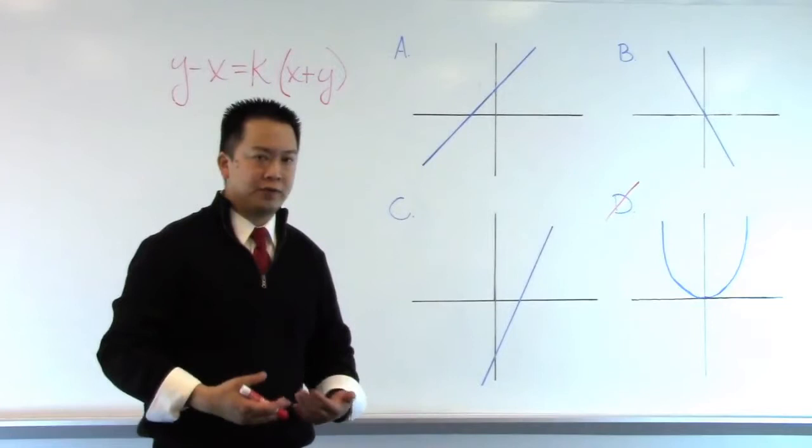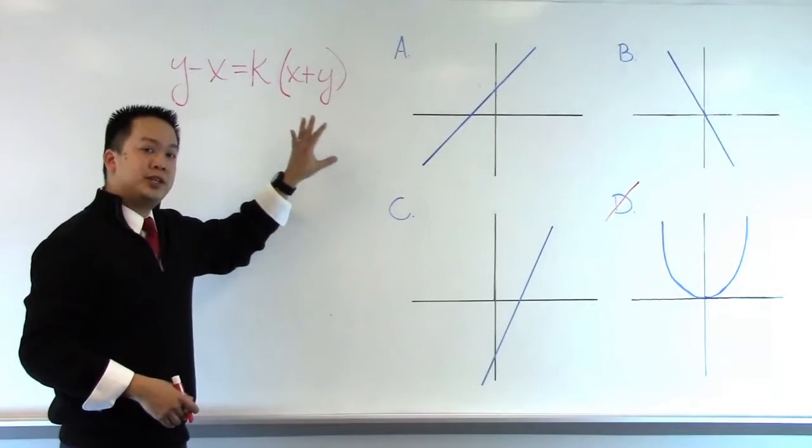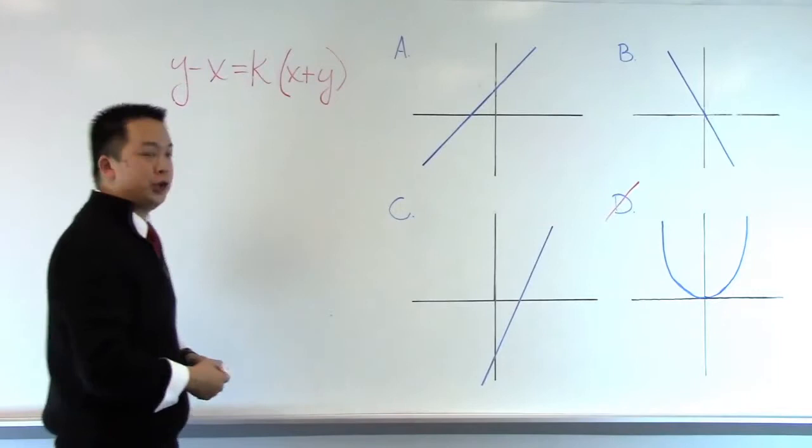For Princeton Review students, we understand that we'll use some data from the graphs and insert them into the equation. For example, let's take the ordered pair of 0, 2, that's representative of answer choice A.